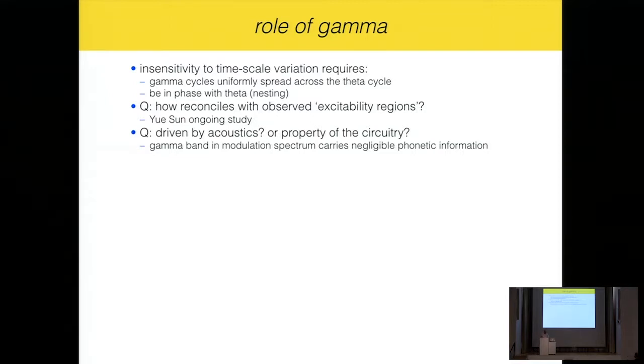Insensitivity to timescale variations require that the gamma cycles uniformly spread across the theta cycle. Then we have a nice representation, a nice code. But how this is reconciling with the observed excitability regions, that means what happens in the part of the theta that it's not excitable and we don't have gamma cycles, so we need to adjust the model here. And that's something that Yue is working on. Is the gamma driven by the acoustics or is it part of the circuitry? Because the gamma is driven by the modulations in the gamma band. But note that it carries very small amount of phonetic information.